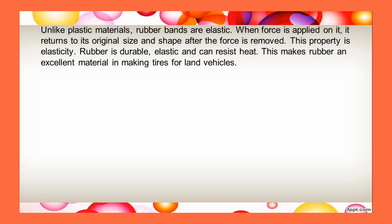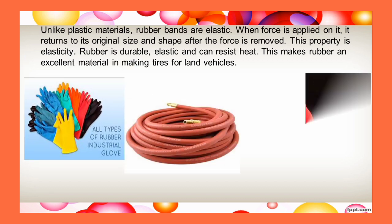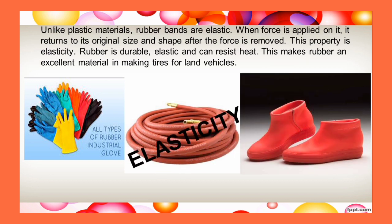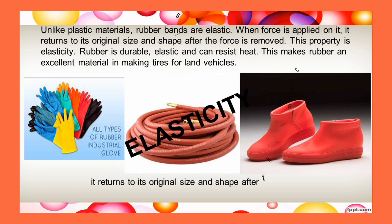Unlike plastic materials, rubber bands are elastic. When force is applied on it, it returns to its original size and shape after the force is removed. This property is called elasticity. Rubber is durable, elastic, and can resist heat. This makes rubber an excellent material in making tires for land vehicles.